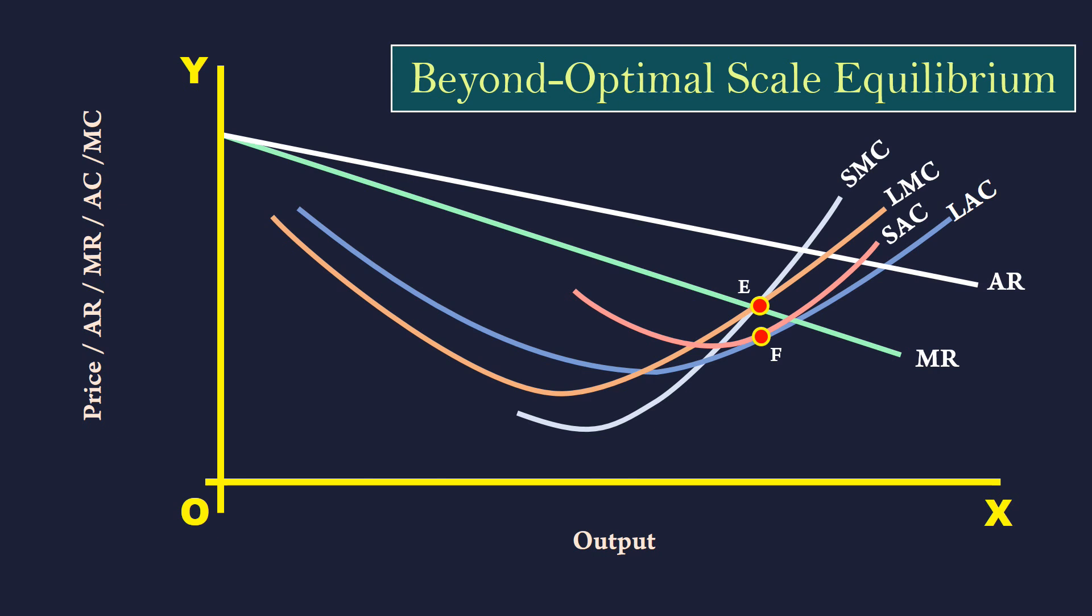Thus, all the long run equilibrium conditions of a monopoly firm are satisfied. Look at point F. It is exactly below point E. It is on the rising side of the LAC curve.